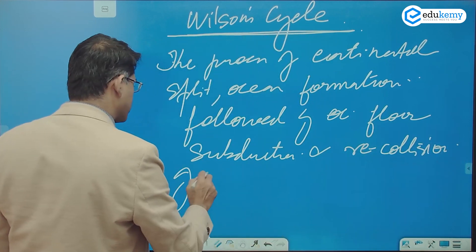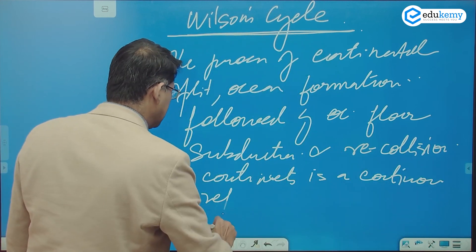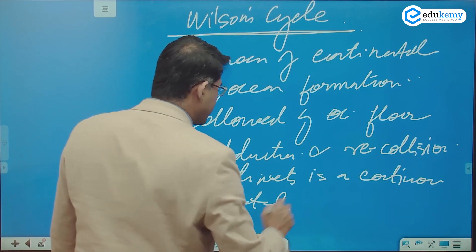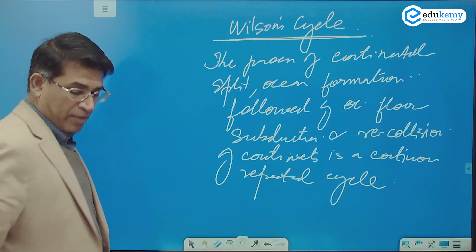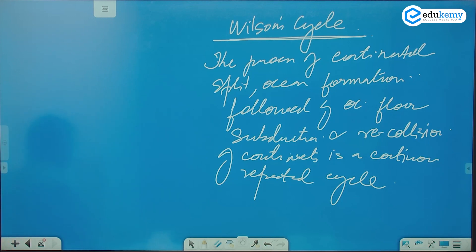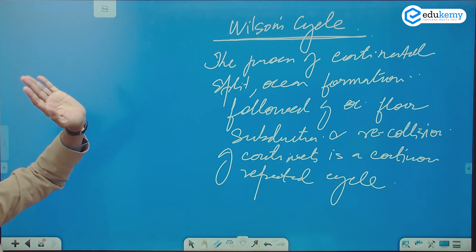The re-collision of continents is a continuous, repeated cycle. So the process of continental split, ocean formation, ocean floor subduction, and re-collision of continents is a continuous repeated cycle — that's why it is called the Wilson Cycle.